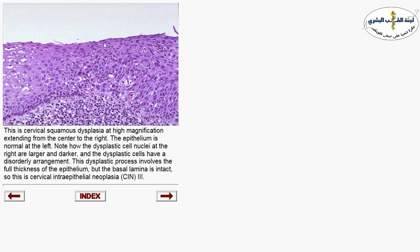In severe dysplasia, comparing the left and right sides, you can see how the nuclei and cells have lost their polarity, not respecting each other, with hyperchromasia reaching up to the surface. This is full thickness dysplasia — CIN grade three. However, the basement membrane remains intact; there is no breaching of dysplastic cells beneath the epithelium or invasion of the stroma. So this is CIN 3 in situ with no invasive component.